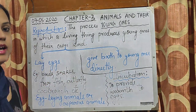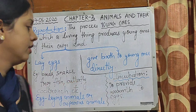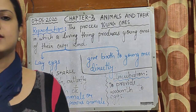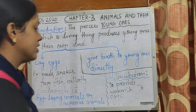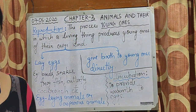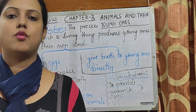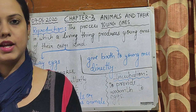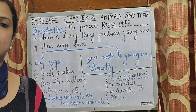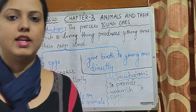If the egg does not get warmness, it will not hatch into offspring. So once the egg gets warmness, after a few days it hatches into offspring. This process is known as incubation. Incubation is the process in which the eggs get the necessary warmth and then hatch into offspring.